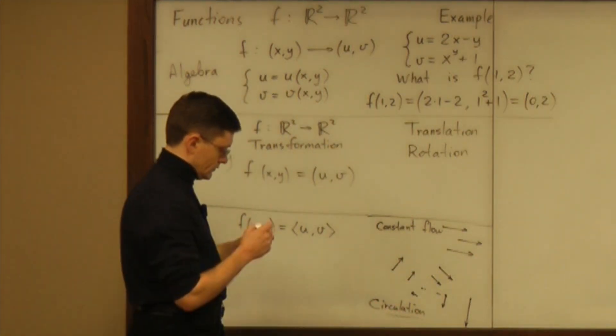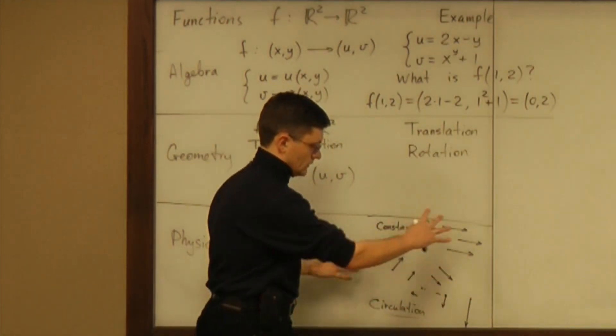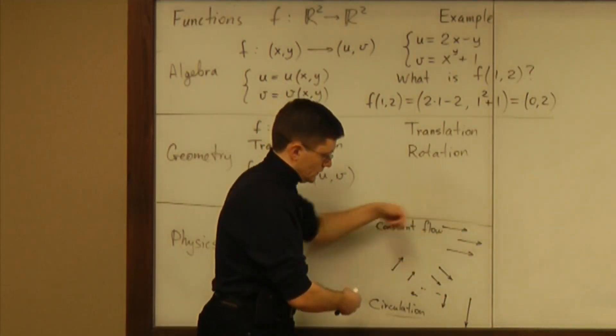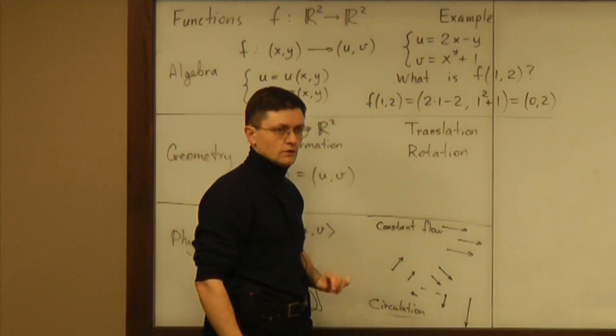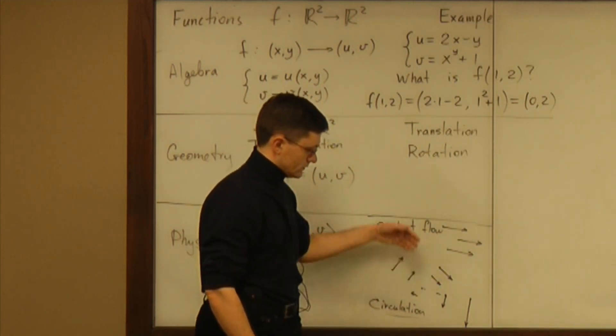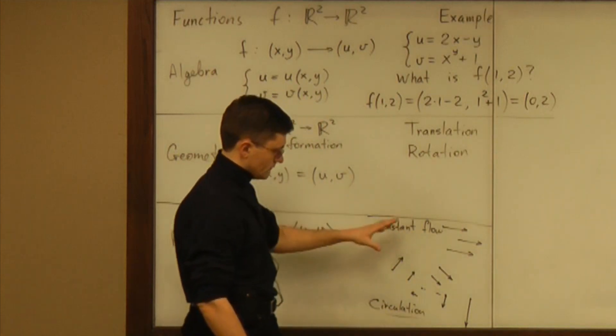So that's an easy example. You can think of a wheel rotating, and then these vectors will represent velocities of the points of the wheel. And of course, the further you go from the center, the greater the speed is of that point.